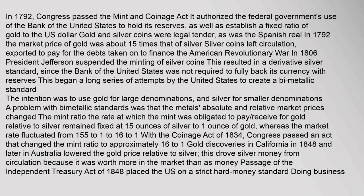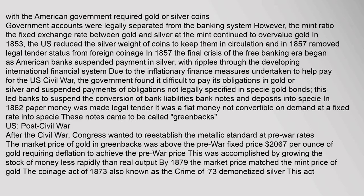With the Coinage Act of 1834, Congress changed the mint ratio to approximately 16 to 1. Gold discoveries in California in 1848 and later in Australia lowered the gold price relative to silver, driving silver money from circulation because it was worth more in the market than as money. Passage of the Independent Treasury Act of 1848 placed the U.S. on a strict hard money standard. The mint ratio continued to overvalue gold; in 1853 the U.S. reduced the silver weight of coins to keep them in circulation, and in 1857 removed legal tender status from foreign coinage.